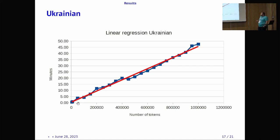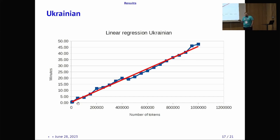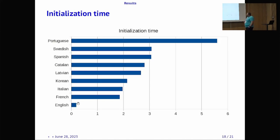For Ukrainian, English, and the mainstream languages it's quite okay, but you can see that the Ukrainian pipeline has a slightly higher time complexity, so we have to spend more time on that or split it across multiple devices to process the same amount of tokens in the same time as English. We also measured initialization time for each pipeline.